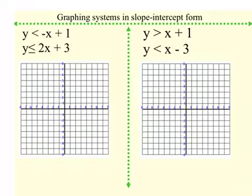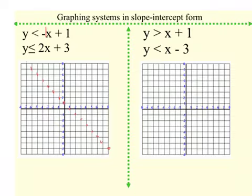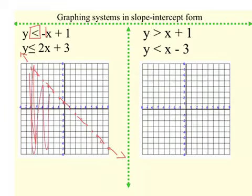We're going to begin with our b, so I'm going to begin at 1 for this first example. And remember this is like a negative 1, so I'm going to go down 1 over 1, and do this throughout the entire graph — and then go the opposite direction too. Now we look at that inequality symbol. That's my less than symbol, which means it's going to be a dotted line. And less than tells me I'm going to shade everything below the line.